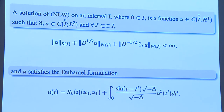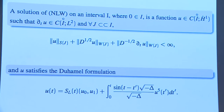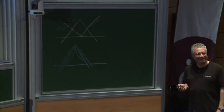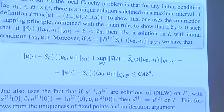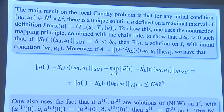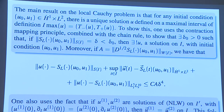Let me define what I will mean by a solution. A solution on an interval I with 0 in I will be a function continuous with values in H1, its t-derivative continuous with values in L2 in the interior of I, and for all compact subintervals we have control of these spacetime norms, and the solution satisfies the integral equation. At the end of this first series of lectures, I will make these notes available.